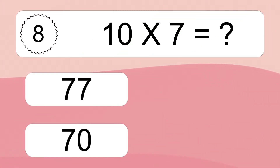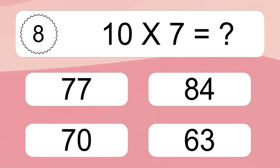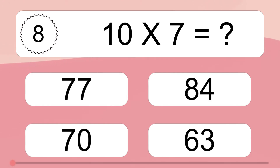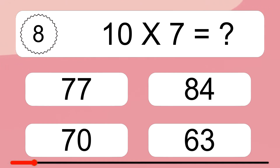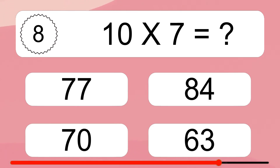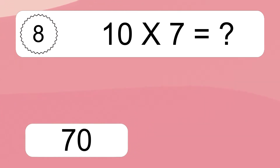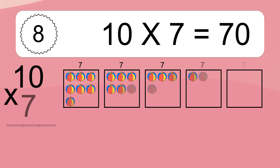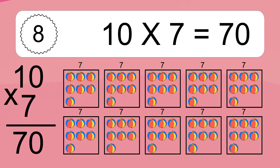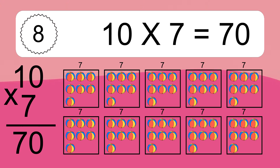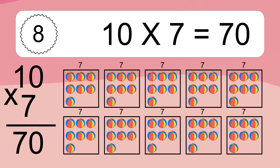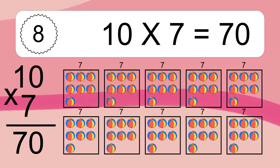Ten times seven equals what? Ten times seven equals seventy. We have ten boxes, and each box has seven colorful balls inside. If you count all the balls in all the boxes together, you will have ten times seven balls.